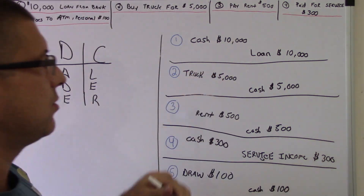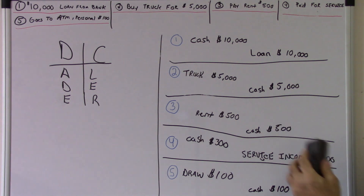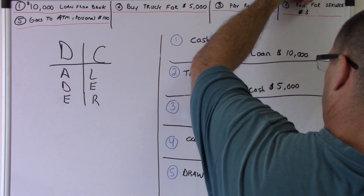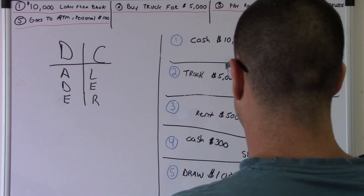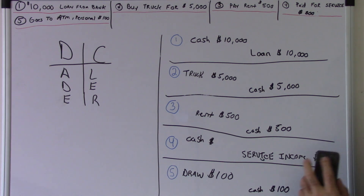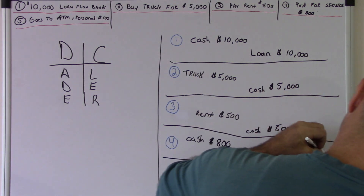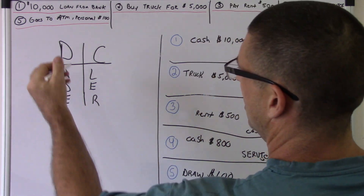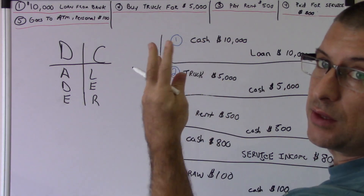I did want to change one example from last time. I want to have a positive income statement, so I'm going to change the income to $800. For the service we did, we got $800. These are the positive sides — debits and credits. We did these journal entries in the third video.